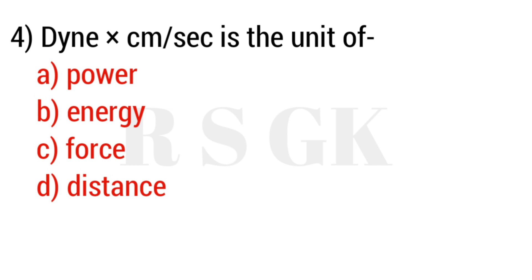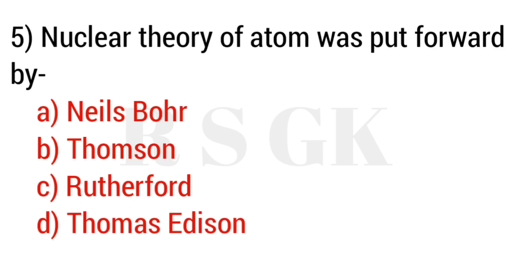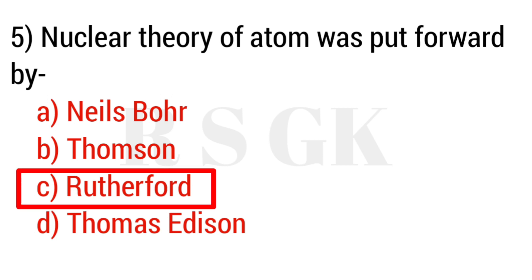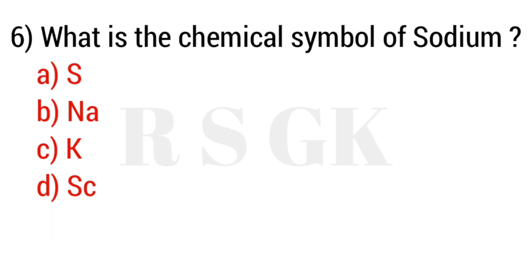The answer is Option A: power. Question number five: Nuclear theory of atom was put forward by — the answer is Option C: Rutherford. Question number six: What is the chemical symbol of sodium? The answer is Option B: Na.